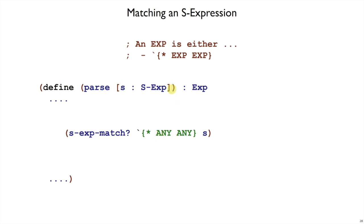The reason I have to write ANY here instead of just EXP is because s-exp-match? only knows a few built-in things. It knows about numbers, and it knows about symbols, and it knows about booleans, but it doesn't know about our definition of expressions. We could try to teach s-exp-match? about that, but in fact, that's what parse is already doing. It's already checking whether we have something that matches this S expression syntax.